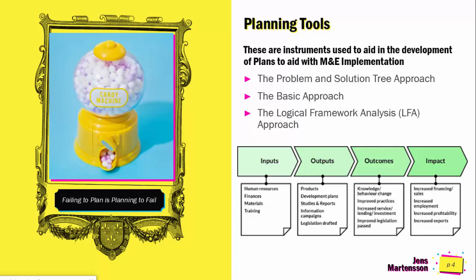The planning tools are basically the instruments that help you in the planning phase. Before you can do any M&E activities, you must be able to set the pace and set the foundation. The problem and solution tree approach is one way of actually doing the planning. Then you've got the basic approach in the development of key performance indicators, and then you've got the logical framework analysis approach. These are the tools you come across most often.